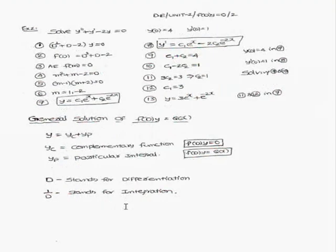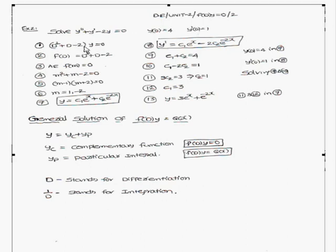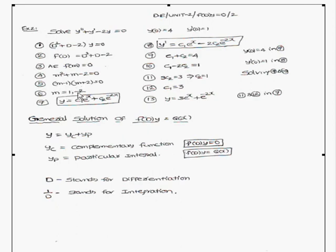Next, we consider one more example: y'' + y' - 2y = 0, where y(0) = 4 and y'(0) = 1. In operator notation: (D² + D - 2)·y = 0. So f(D) = D² + D - 2. The auxiliary equation is f(m) = 0, that is m² + m - 2 = 0, which factors as (m - 1)(m + 2) = 0, giving m = 1, -2. Therefore the complementary function is y = c1·e^x + c2·e^(-2x).